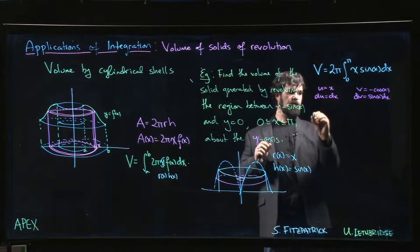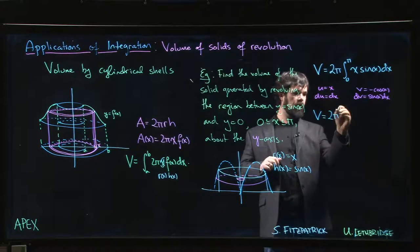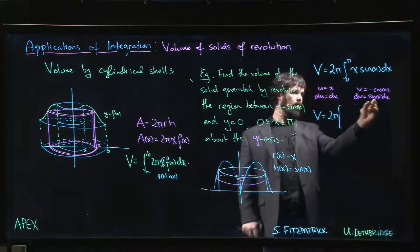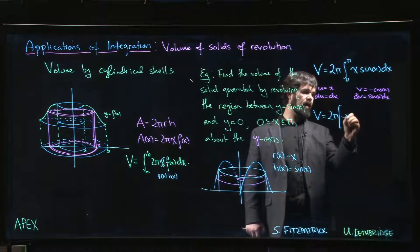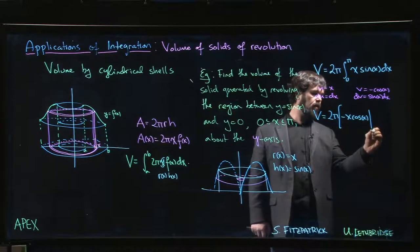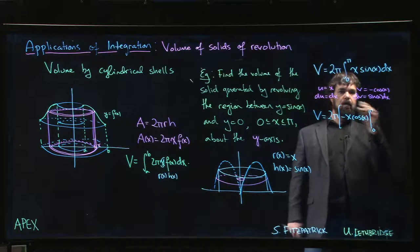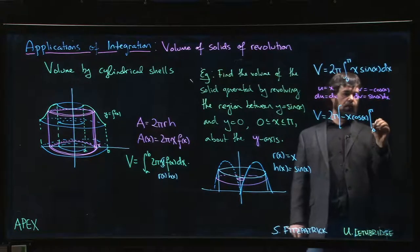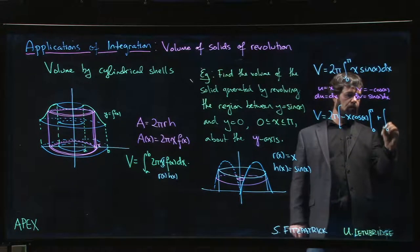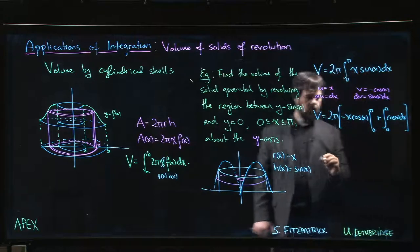So that makes our volume equal to 2 pi times uv, which is going to be minus x cos x, and we've got to do that from 0 to pi. Minus minus becomes plus the integral from 0 to pi cos x dx.